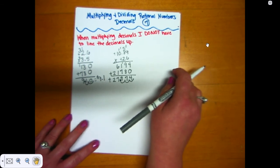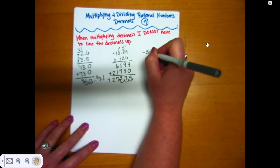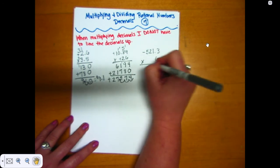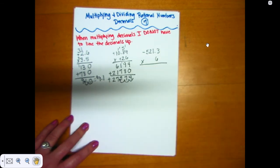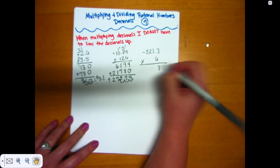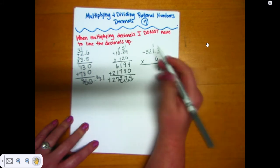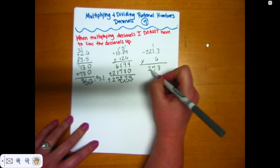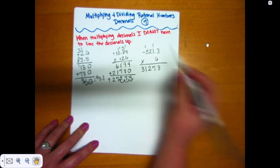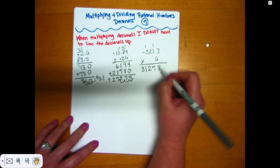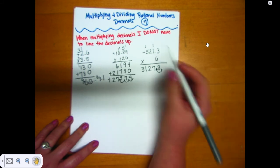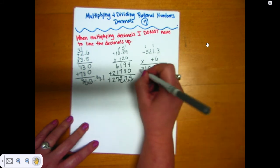Let's do one with negatives: negative 521.3 times positive 6. Six is a whole number so it has no decimal. Multiply: 6 times 3 is 18, carry your 1; 6 times 1 is 6, plus 1 is 7; 6 times 2 is 12, carry your 1; 6 times 5 is 30, plus 1 is 31. There is one decimal place, so go one from the right to place the decimal. The signs are different — one negative, one positive — so the answer is negative.